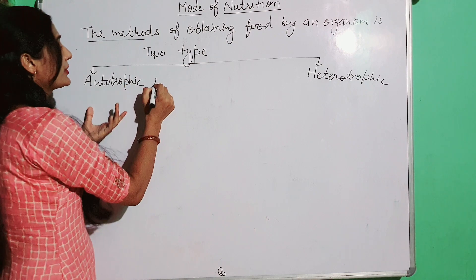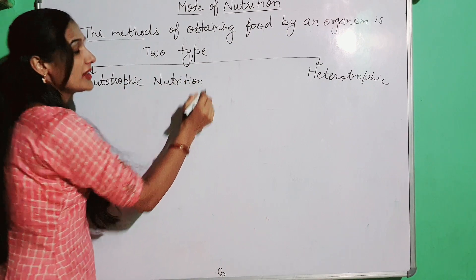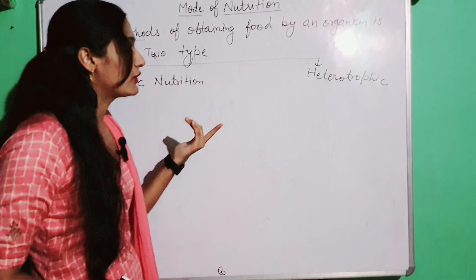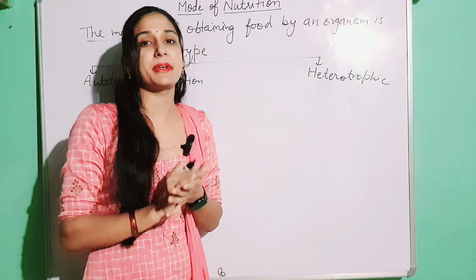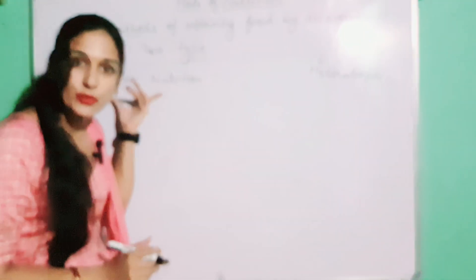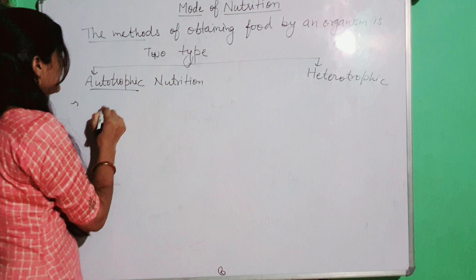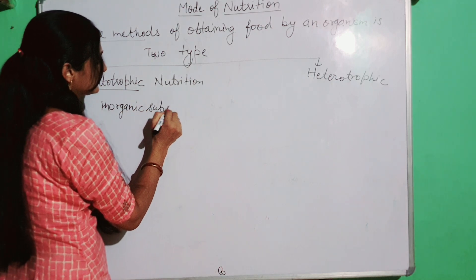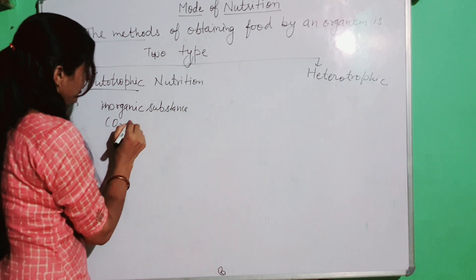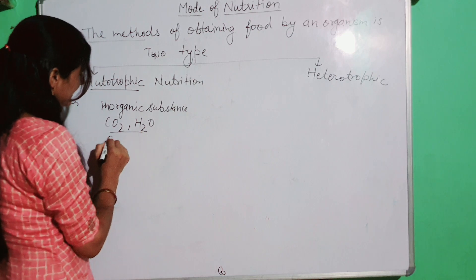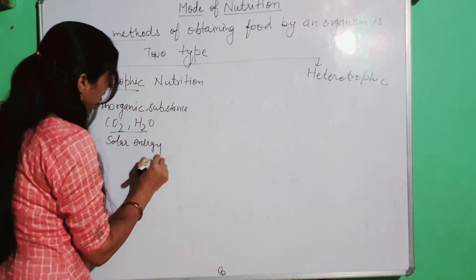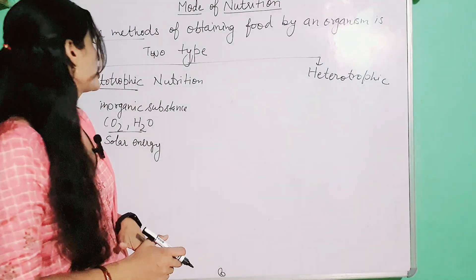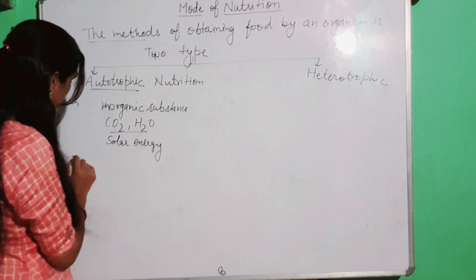What is autotrophic mode of nutrition? The mode of nutrition in which living organisms prepare their food themselves. In this mode of nutrition, the living organisms prepare their food from inorganic substances like carbon dioxide and water, with the help of solar energy or sunlight. This mode of nutrition is known as autotrophic mode of nutrition.